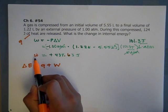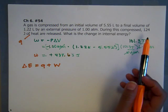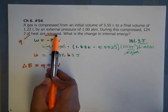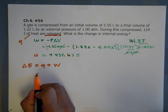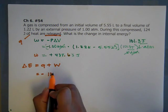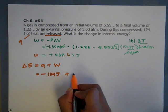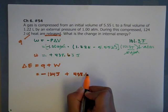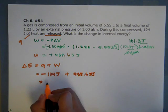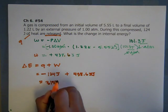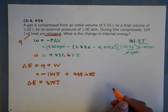So we know that the W part is going to be a positive number. But what is Q going to be? If 124 joules of heat are released, that signifies a negative. So we're going to have negative 124 joules plus a positive 438.63 joules. And after that, our final answer is 315 joules. We take it out to correct sig figs as our change in internal energy.